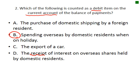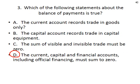Let's make sure the other options don't apply. The export of a car — money would be flowing in, not out. The receipt of interest on overseas shares held by domestic residents is part of the current account, but again it's money flowing in not out, because of the term 'receipt' — meaning the receiving of funds.